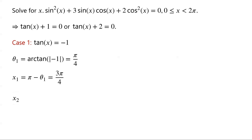The solution in quadrant 4 is 2 pi minus theta 1, which equals 2 pi minus pi over 4, which is 7 pi over 4.